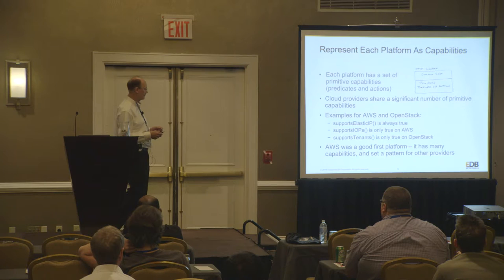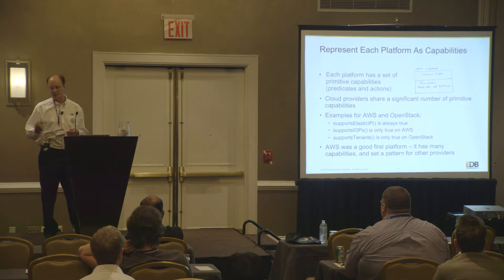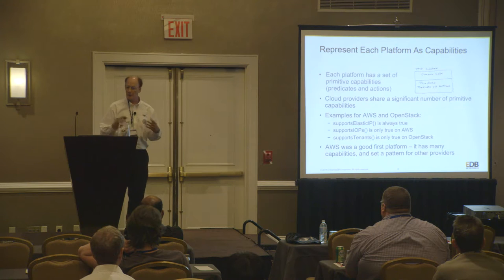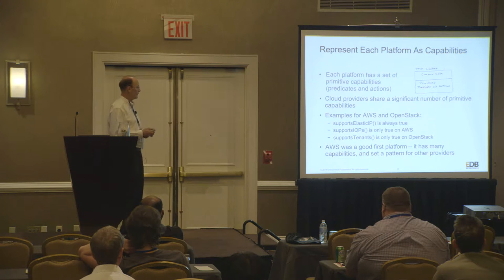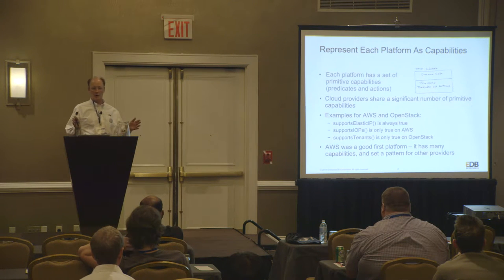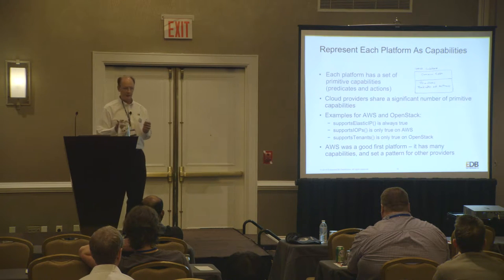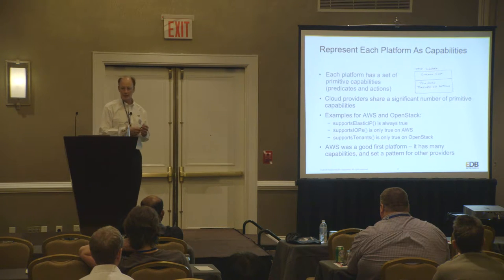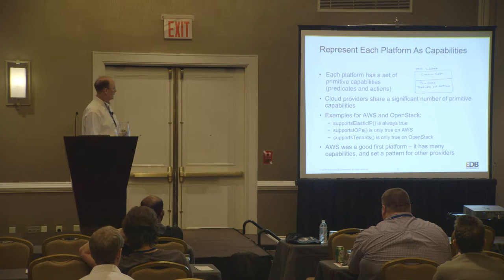What we did was a hybrid approach: we identified a set of primitive capabilities that are common across different cloud providers. Instead of having code that was monolithically separate for AWS and OpenStack, we provide a set of capability primitives that allow the code to find out: is this capability available in the context we're currently running in? That's a predicate — a test you would use in your code. And then when you want to take some action, you have code that responds to that within the context of the provider.